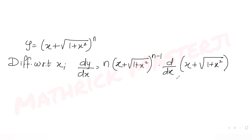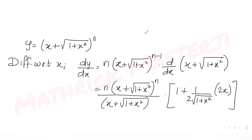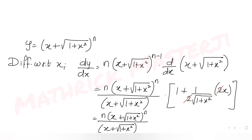Taking the derivative gives n times (x + √(1 + x²))^(n-1). I can write that as n divided by (x + √(1 + x²)), since that ratio gives the n-1 power. The derivative of this inner expression: derivative of x is 1, and derivative of √(1 + x²) is 1/(2√(1 + x²)) times 2x, so the 2s cancel, leaving (√(1 + x²) + x) over √(1 + x²).